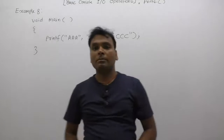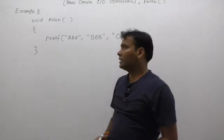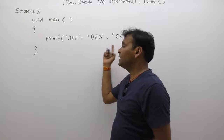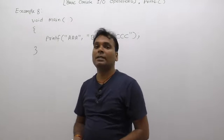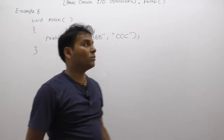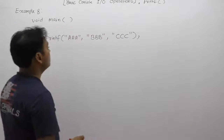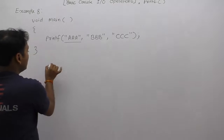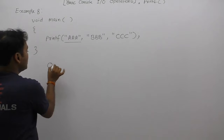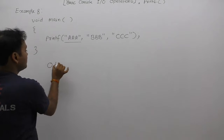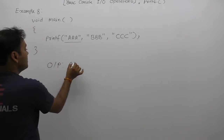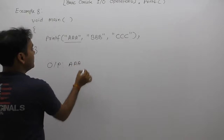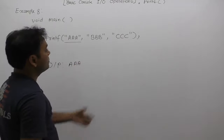Again, almost similar to the previous case — here we are supplying three distinct types of arguments, but printf prints only the value of the first argument, which is 'aaa'. The output is simply 'aaa'. Here we are not able to distinguish 'vvv' or 'ccc'.